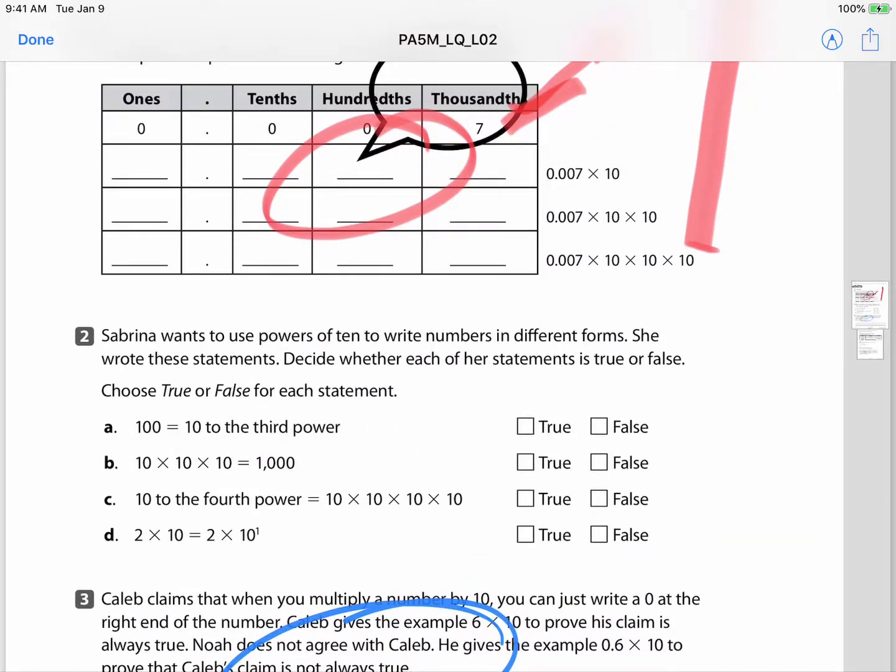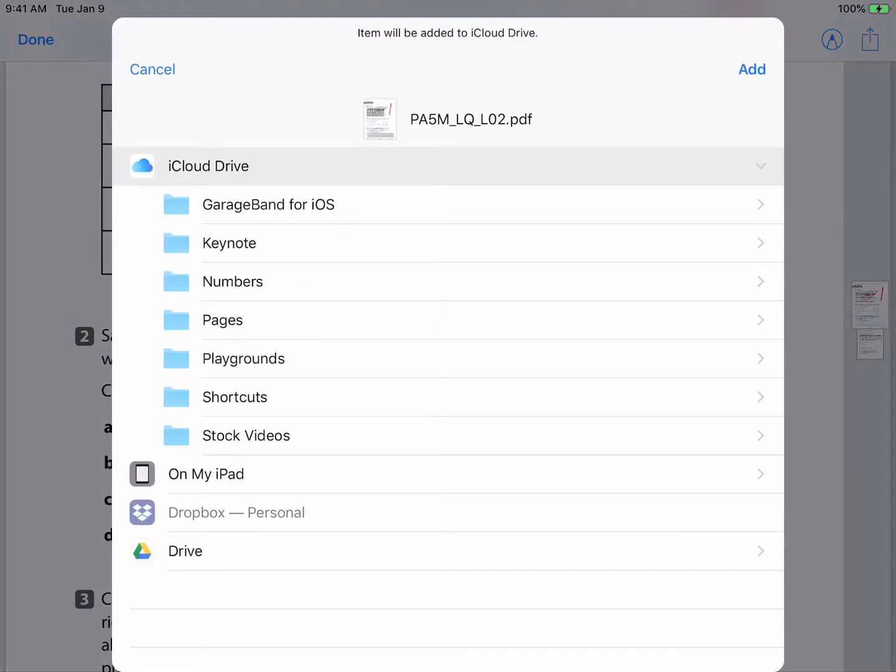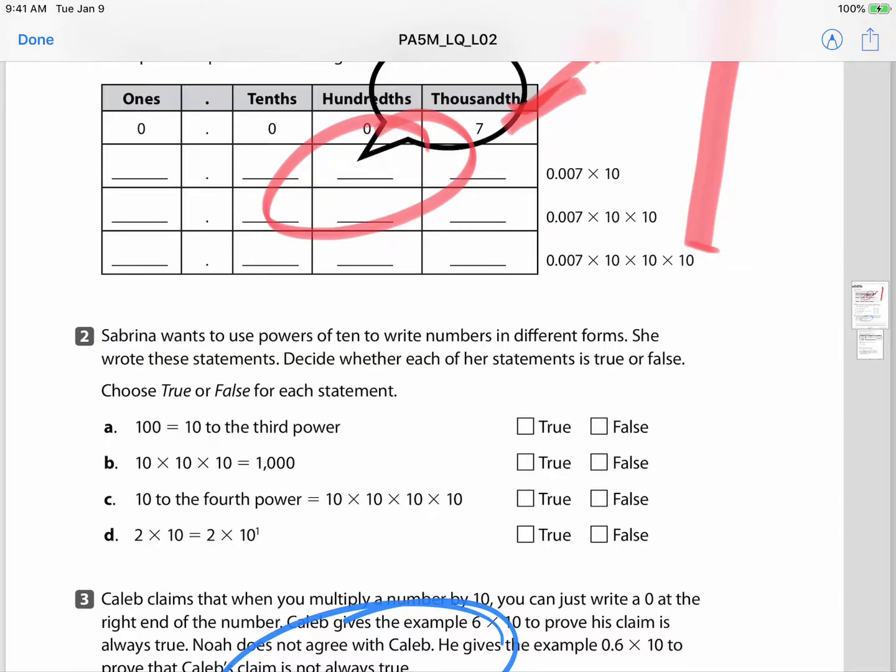When I'm finished I'll click done. I give the option to just delete the PDF and move on or I can save the file to my cloud. So if I save it to my cloud drive I could then share it with students, put it on my website, and they can access that at a later time. So that is the easy annotate feature on the iPad.